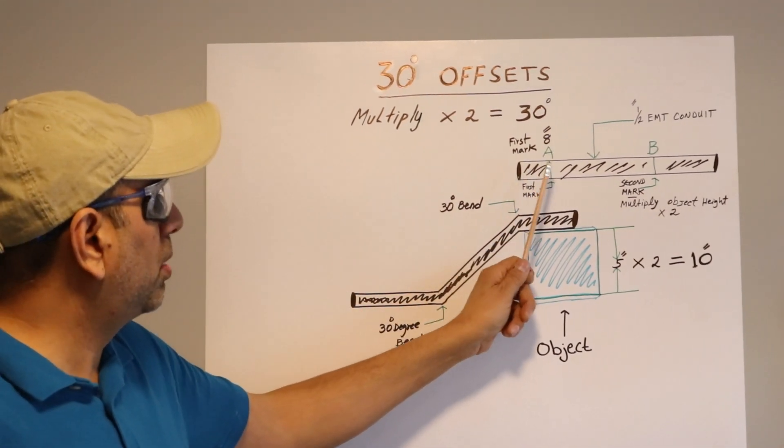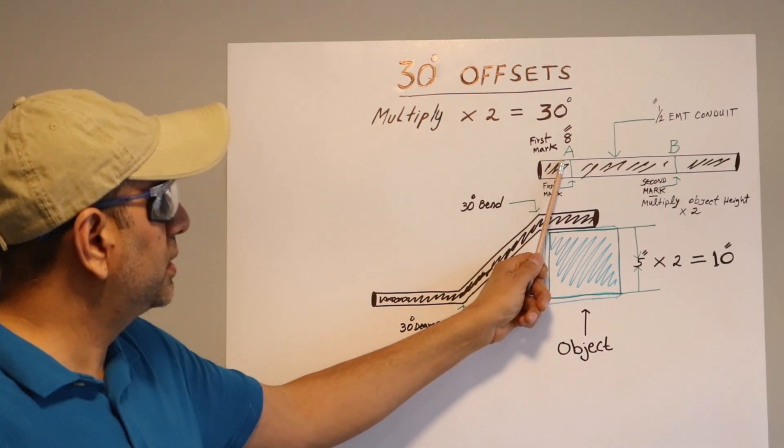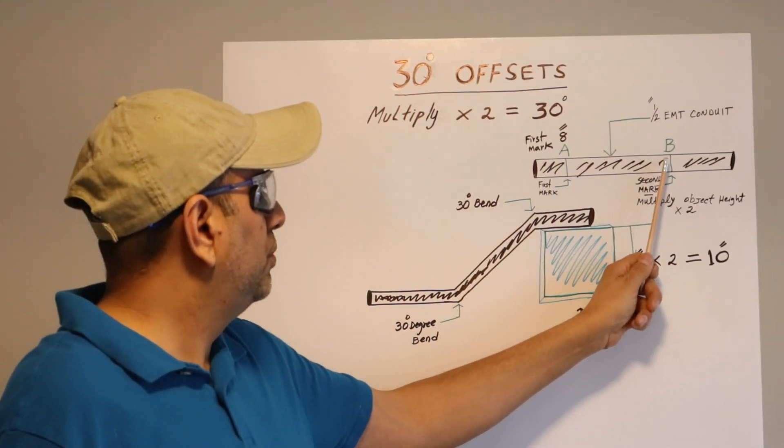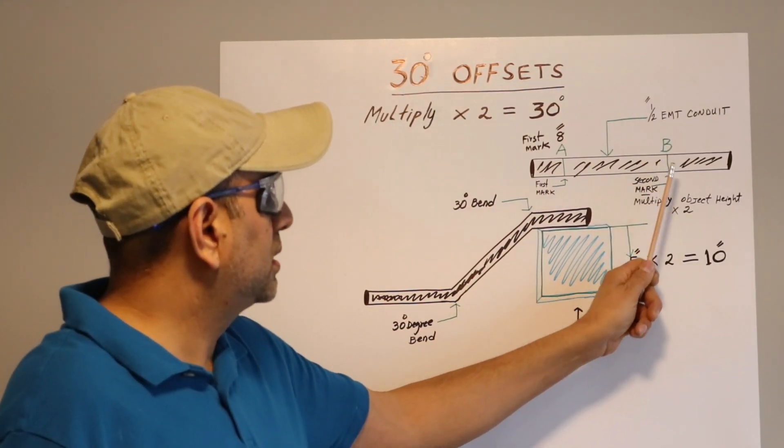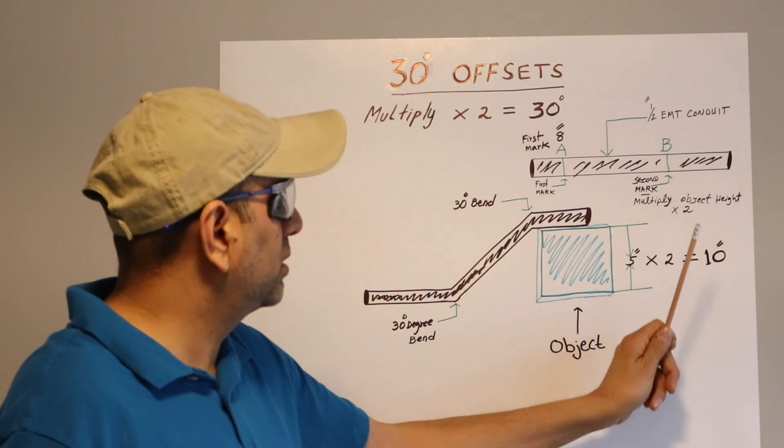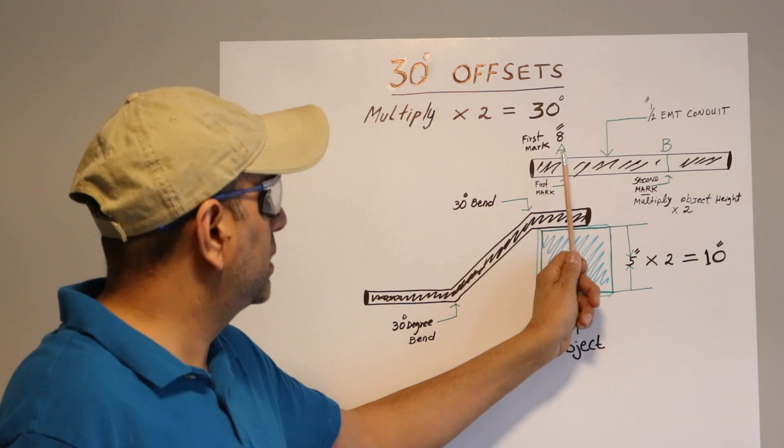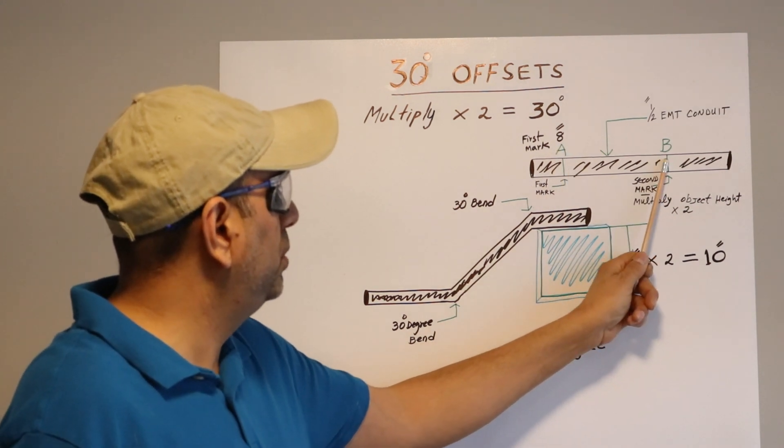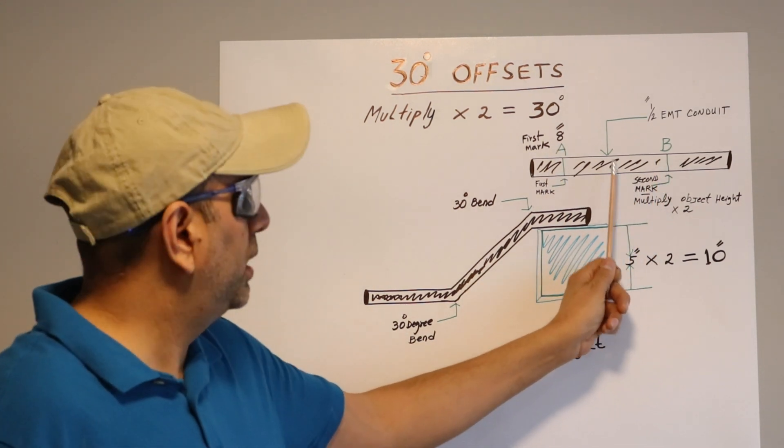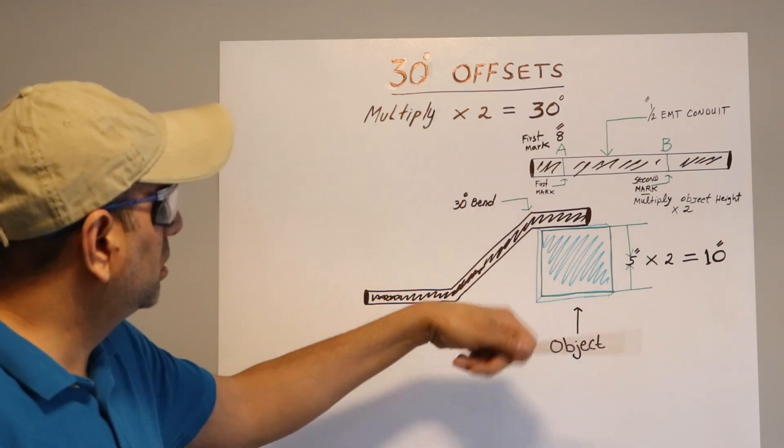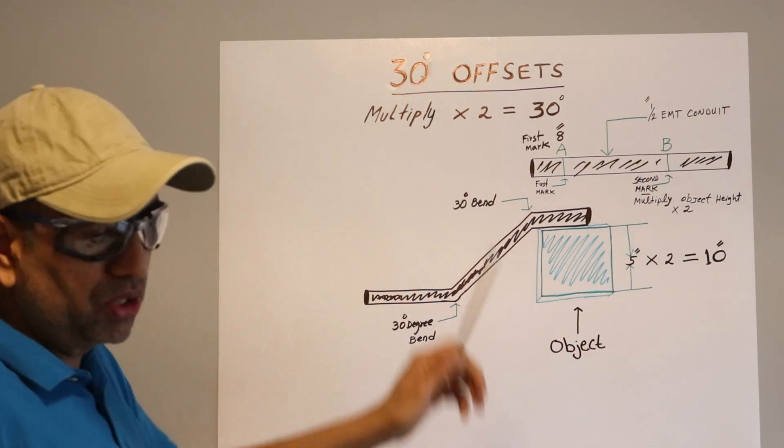In your case, you can take either six inches or five inches. In my case, I'm taking eight inches. My first mark will be at eight inches, and the second mark, which is B, is gonna be multiplied by two. That means ten inches. So first mark eight inches, and from point A to point B, my second mark will be ten inches. This is the little formula. Let's do it now.